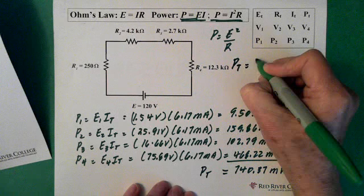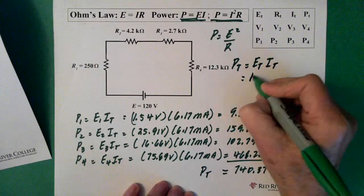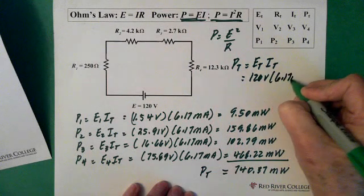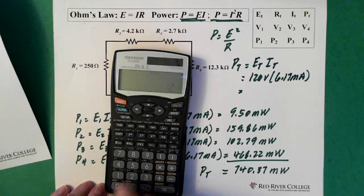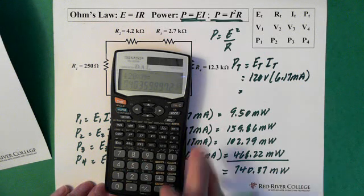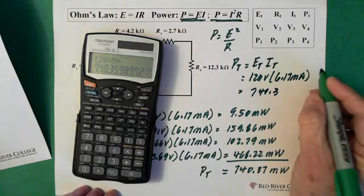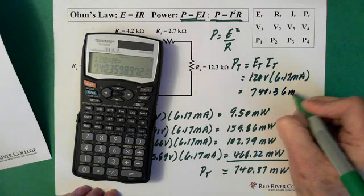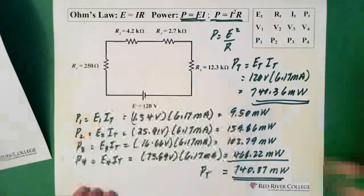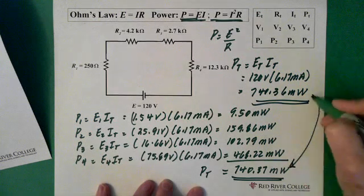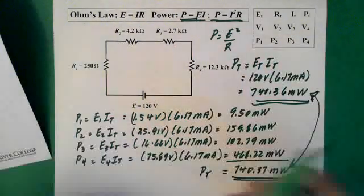The check for total power is total voltage times total current. 120 volts times 6.17 milliamps. 120 times, recall the current, equals, let's hope this is right, 740.36 milliwatts. Okay, that is close enough. So all this does, this piece just says, okay, I'm good, everything's fine here. As long as these two equal one another, you can be very confident that the circuit is correct.